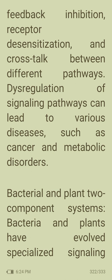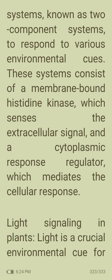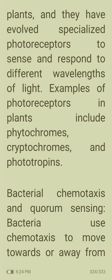Bacteria and plants have evolved specialized signaling systems known as two-component systems to respond to environmental cues. These consist of a membrane-bound histidine kinase, which senses the extracellular signal, and a cytoplasmic response regulator, which mediates the cellular response. In plants, light is a crucial environmental cue, and specialized photoreceptors — including phytochromes, cryptochromes, and phototropins — sense and respond to different wavelengths of light.